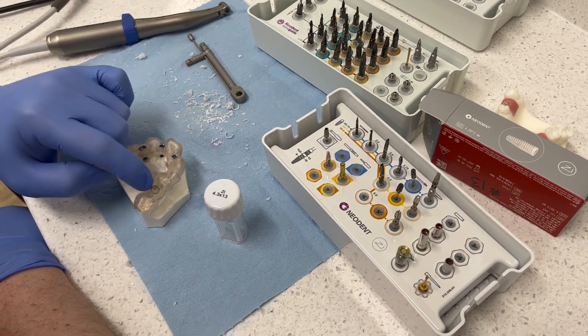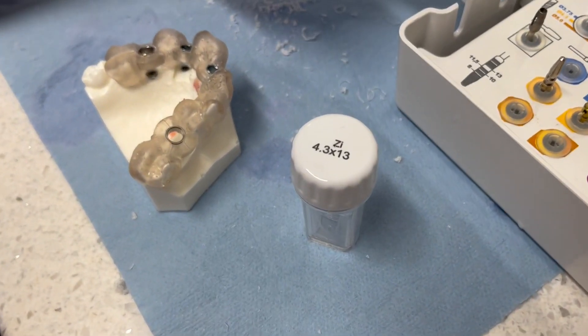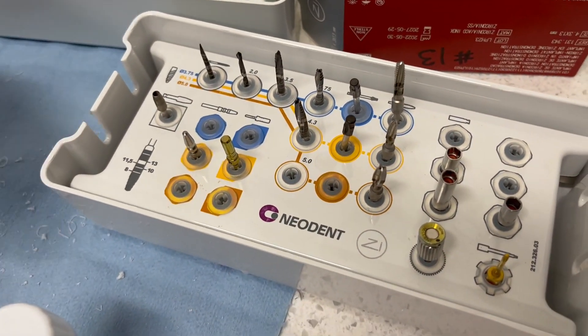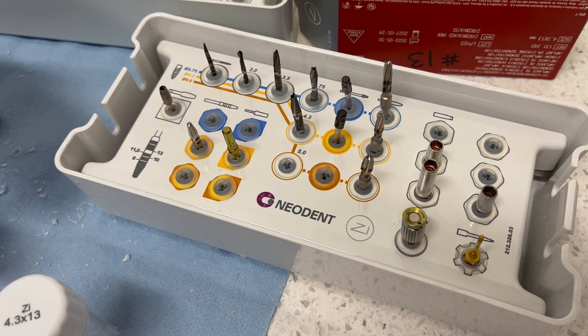We're going to do a ZI in number 13. So if we look at the ZI kit, we're going to be a little bit different than we are for our normal GM kit. So this model is going to be mimicking more of a D1, D2 type bone.